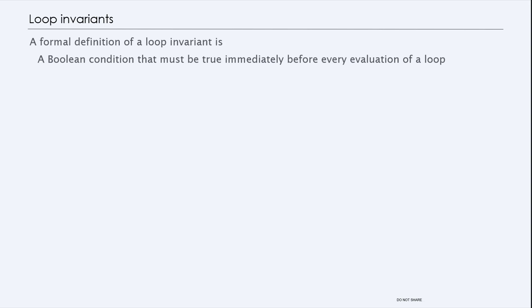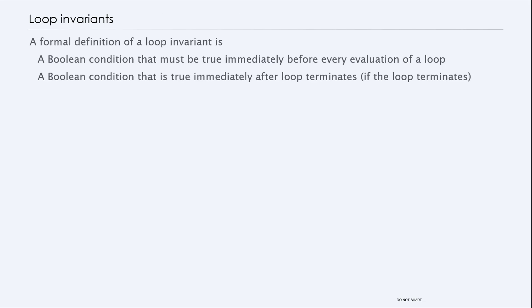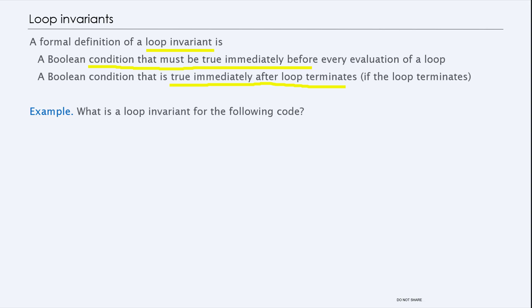Looking at some examples of loop invariants and the formal definition: a loop invariant is a Boolean condition that must be true immediately before every evaluation of a loop, as well as immediately after the loop terminates. If you take a look at this code here, we can start with a precondition asserting that i equals 0 and n is greater than or equal to 1. In order to find loop invariants, you have to know what things actually change within the loop, because anything that doesn't change is a loop invariant.